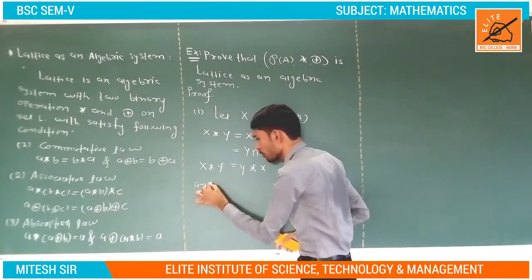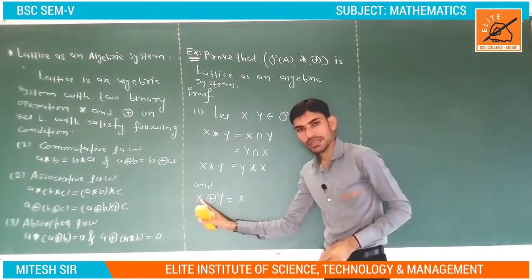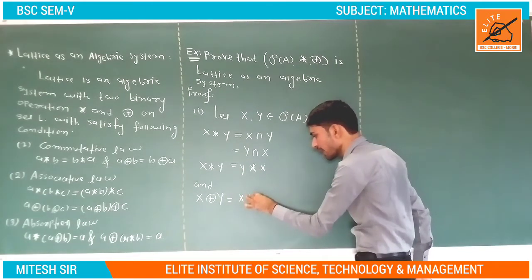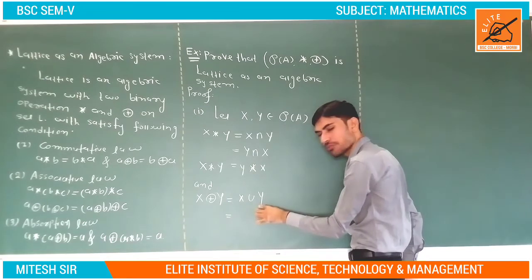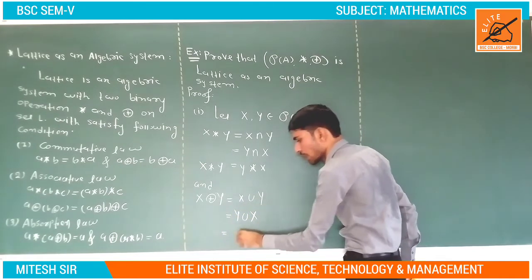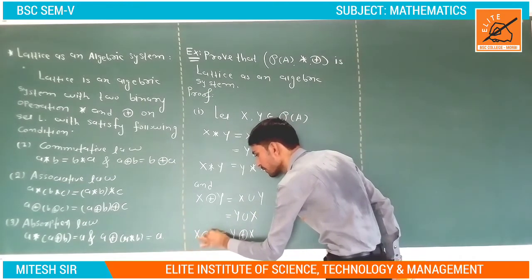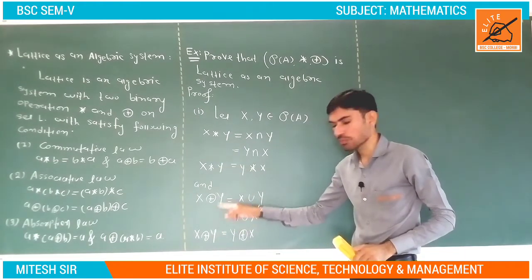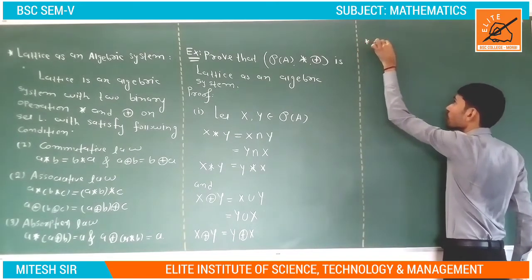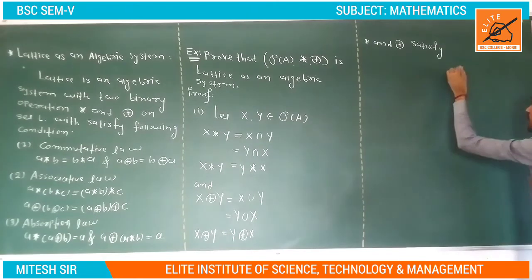So in short, star and ringsum both satisfy the commutative law.